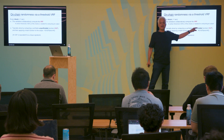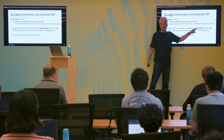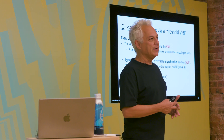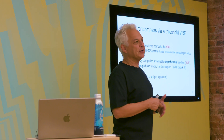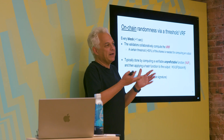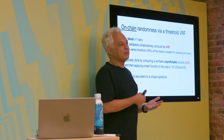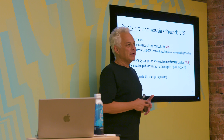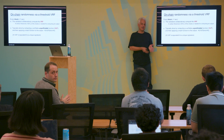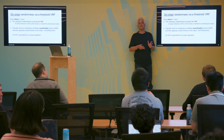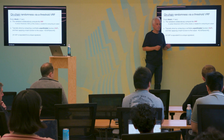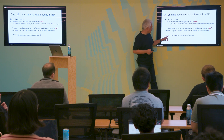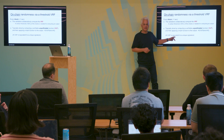Every block - about every second - the validators together compute the VRF, secure as long as less than 50% collude. Typically, a VRF is computed by first computing a VUF (Verifiable Unpredictable Function) and then applying a hash function to the output. The VUF is verifiable and unpredictable, and a VRF is essentially equivalent to a unique signature - a signature is also unpredictable and verifiable. It must be unique because if there were multiple possible outputs for the same input, an adversary could choose whichever output is most favorable.